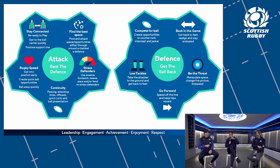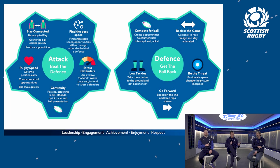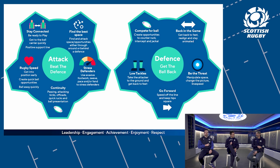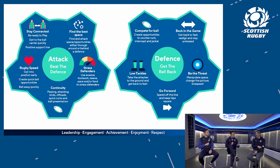Once those parameters are in place, the defense is influenced enough to create space for the attack to manipulate and hopefully score. To supplement the principles of play, we have the rugby cogs. On screen is the attack model — the key term is how to beat the defense. Go forward covers running, evasion, passing, and kicking. The defensive model's tagline is how to get the ball back — rather than just stopping the attack, we want to get the ball back and transition into attack. We also have rugby speed as a cog.